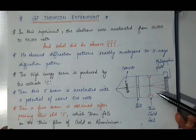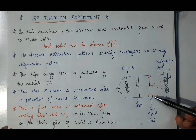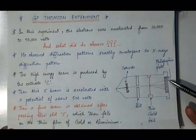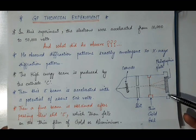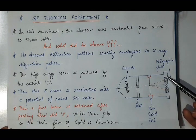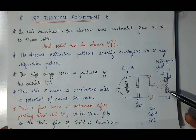After passing through the foil, we observe a diffraction pattern similar to that of the X-ray diffraction pattern on a photographic plate, and concentric rings are observed.